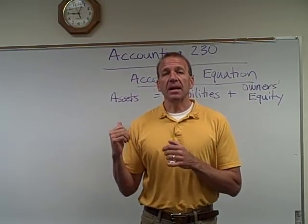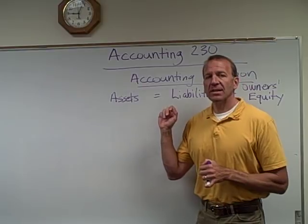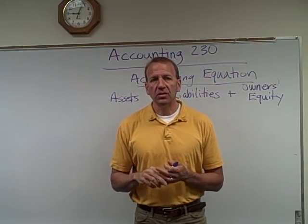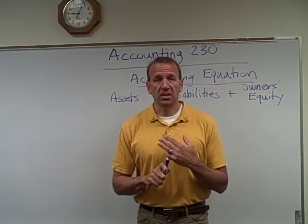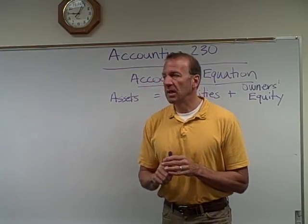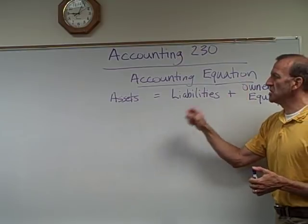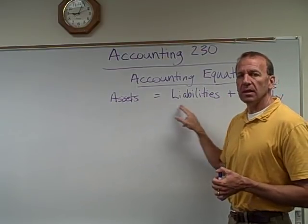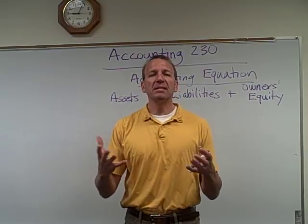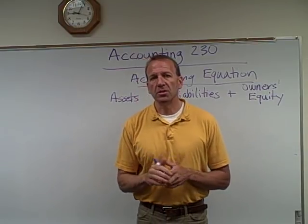Now this is the next chapter. The next chapter starts off by talking about the financial statements. Before I get into the first financial statement we want to talk about — the balance sheet — I just want to explain the accounting equation. The accounting equation is assets equal liabilities plus owner's equity. This is what makes up our balance sheet, but let's look at this accounting equation first.